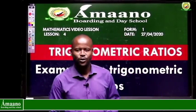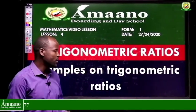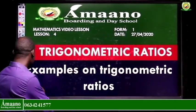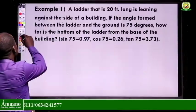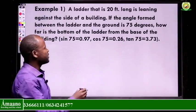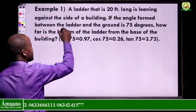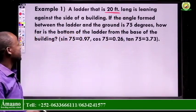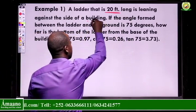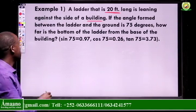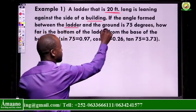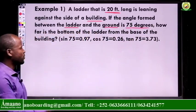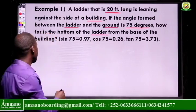Welcome to our today's video lesson on trigonometric ratios. We'll see additional examples. The first example says: a ladder that is 20 feet long is leaning against the side of a building. If the angle formed between the ladder and the ground is 75 degrees, then how far is the bottom of the ladder from the base of the building?